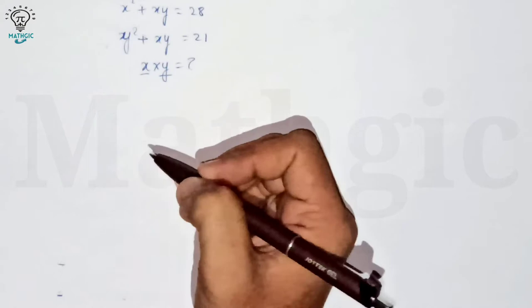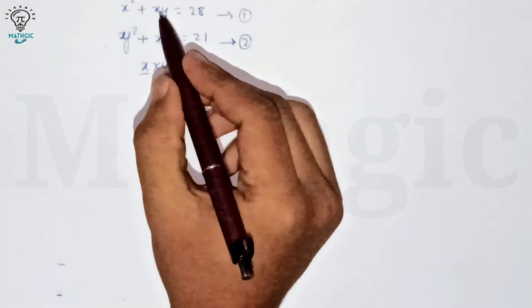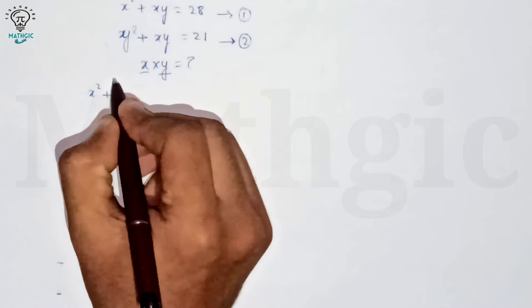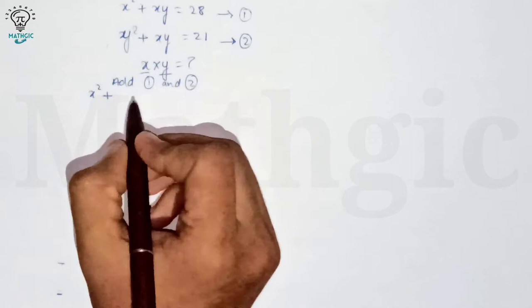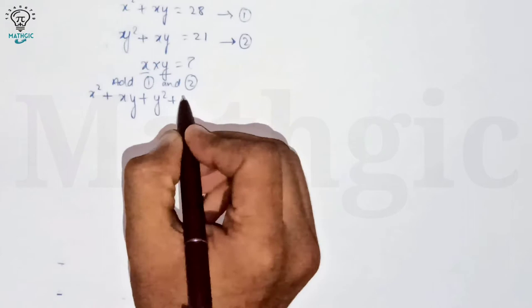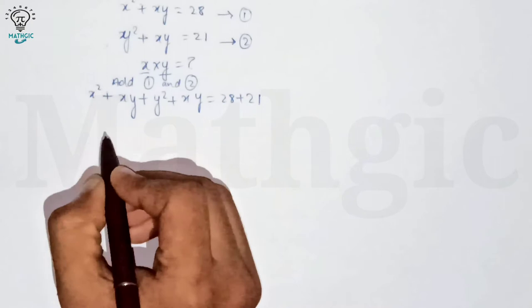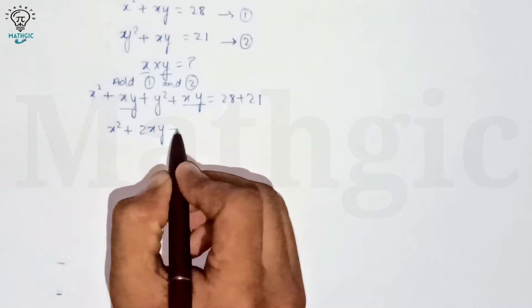First, add both equations — LHS to LHS and RHS to RHS. Equation one is x squared plus xy, and equation two is y squared plus xy, which equals 28 plus 21. So we have x squared plus xy plus xy plus y squared equals 49.